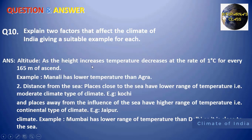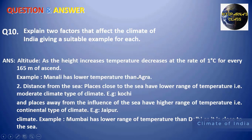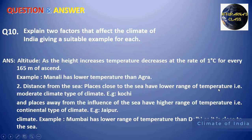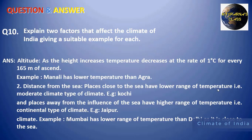Next: explain two factors that affect the climate of India with suitable examples. First, as height increases, temperature decreases — for example, Manali has a lower temperature than Agra. Second, distance from the sea: places close to the sea have a lower range of temperature. For example, the difference between summer and winter temperature near the sea may be only 8°C — say, 28°C in summer and 20°C in winter.